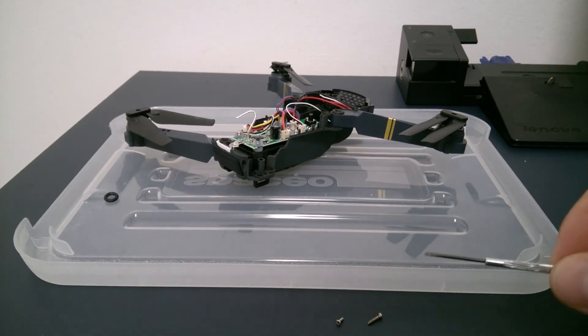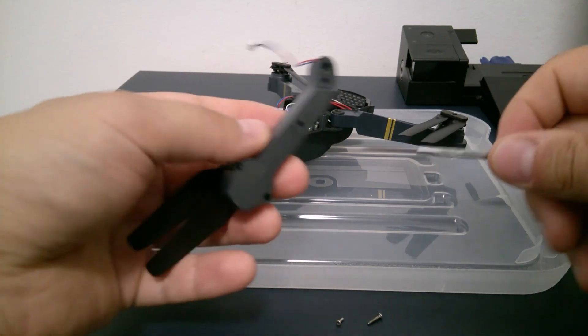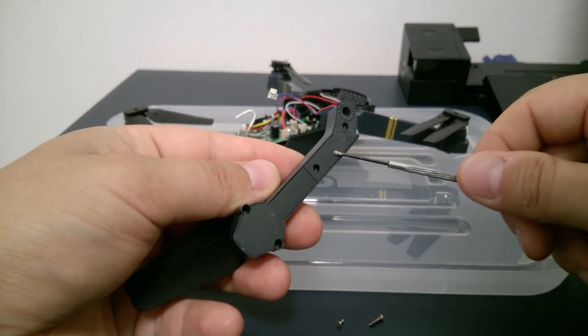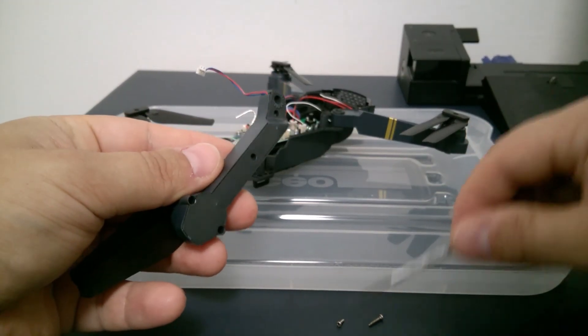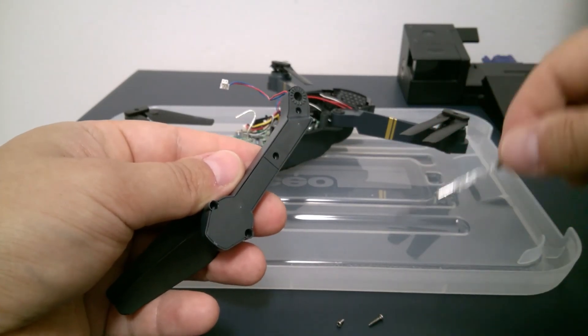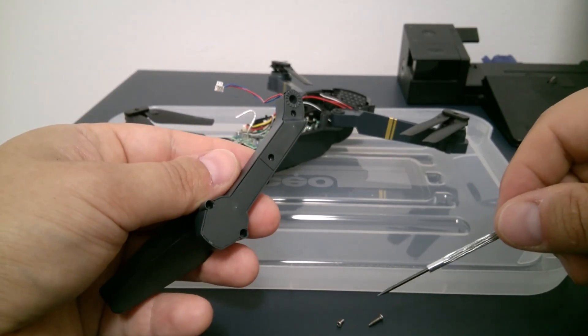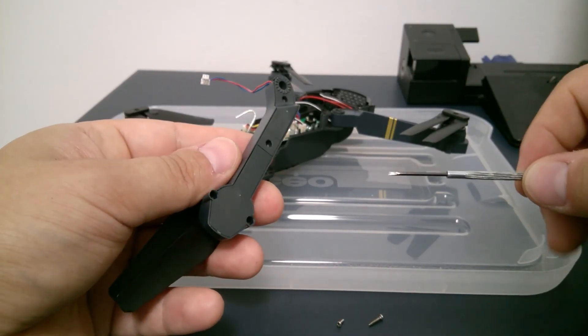The screws used to keep the cap of the drone in its position and the covers on the arm are different. And the screws used for the arm are smaller than the ones used for the cap. So make sure you keep them separately and don't mix them.